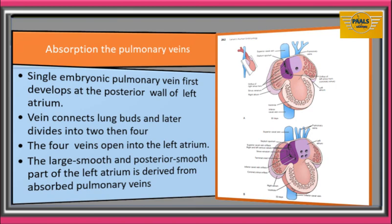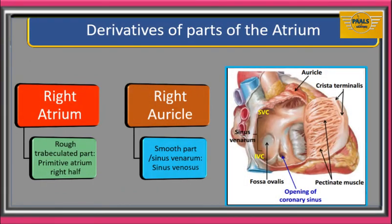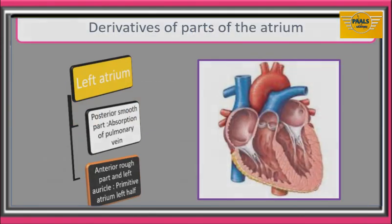The large smooth posterior part of the left atrium is derived from the absorbed pulmonary vein. Regarding derivatives of the atrium: the rough trabeculated part in front of the crista terminalis is formed by the primitive atrium in its right half. The smooth part, also called sinus venarum, behind the crista terminalis, is formed by the sinus venosus. For the left atrium, the posterior smooth part is formed through absorption of the pulmonary vein, while the anterior rough part and left auricle are formed through the primitive atrium in its left half.